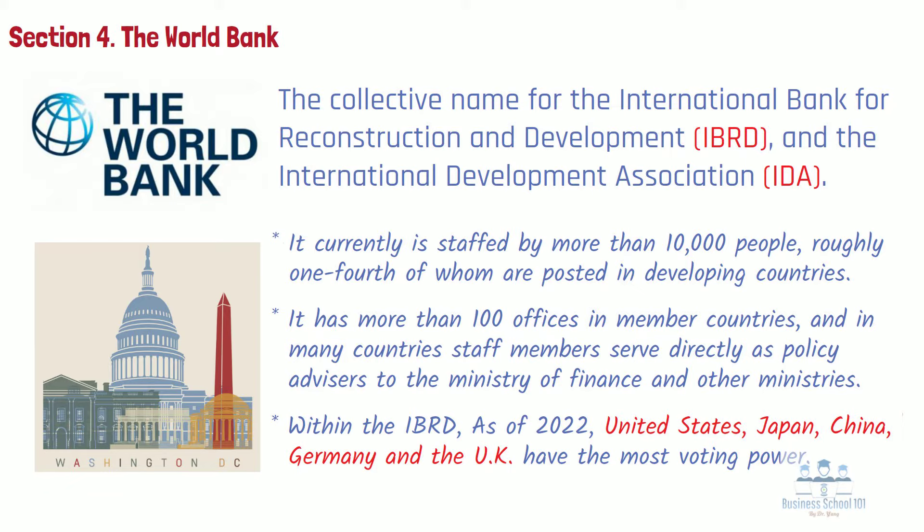For example, in the early 21st century, the United States exercised nearly one-sixth of the votes in the IBRD. Because developing countries hold only a small number of votes, the system does not provide a significant voice for these countries, which are the primary recipients of World Bank loans and policy advice.